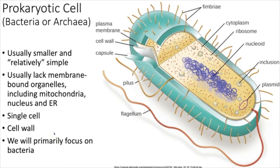Stentor coeruleus is part of the ciliates — organisms that use cilia both to propel themselves through water and to bring food particles and single-celled organisms into the cell mouth. We see here a multicellular rotifer being swallowed by the giant Stentor. The rotifer ruptured the Stentor's cell membrane multiple times, but each time the Stentor repaired itself. After 25 minutes, the rotifer ceased its struggle.